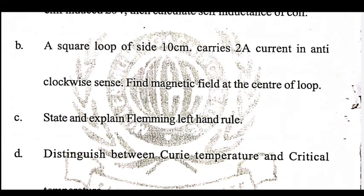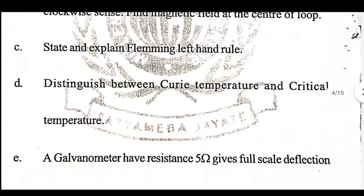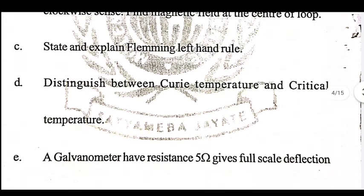A square loop of side 10 cm carries 2 ampere current in an anti-clockwise sense — find the magnetic field at the center of the loop. State and explain Fleming's left-hand rule and Fleming's right-hand rule.